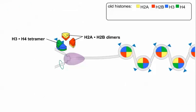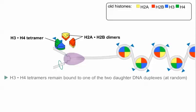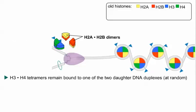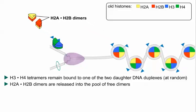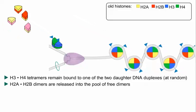The H3-H4 tetramers remain bound to one of the two daughter DNA duplexes at random. The H2A-H2B dimers remain intact, but are released into the pool of free dimers surrounding the replication fork.